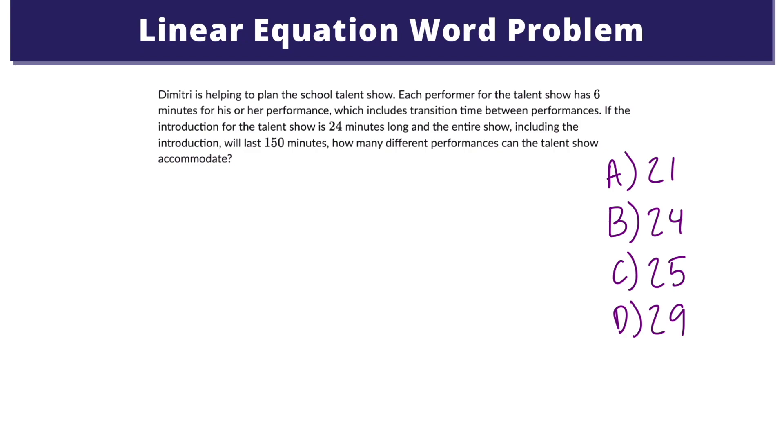In this first example, let's start by writing an expression for the time taken up by the performance of the talent show. We can use p to represent the number of performances. Each performer has six minutes for their performance, which includes transition times between performances. So the time needed for all performances is 6p. Since we know that the introduction to the show is 24 minutes, the total time needed is 6p plus 24.